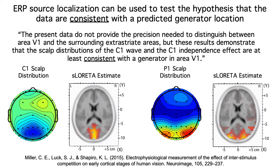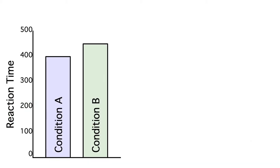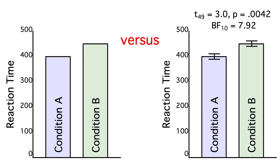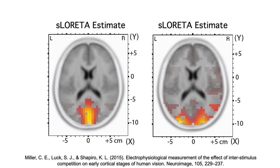After all, if you read a paper saying that mean reaction time was 50 milliseconds greater in one condition than in another, would you believe it if they provided nothing but the means? Wouldn't you need standard errors, confidence intervals, Bayes factors, p-values? You need an estimate of error with RT, so why shouldn't you require the same thing when someone tries to estimate the location of an ERP generator source?